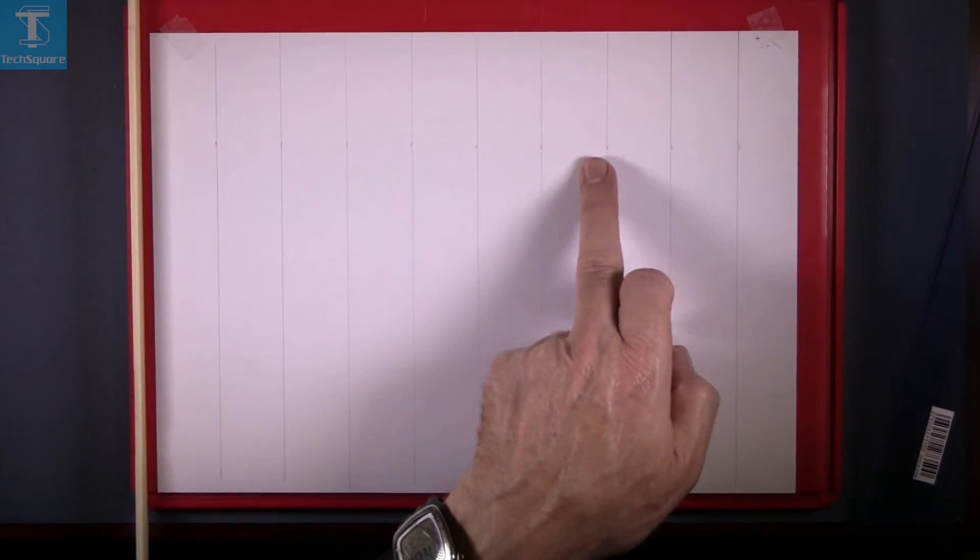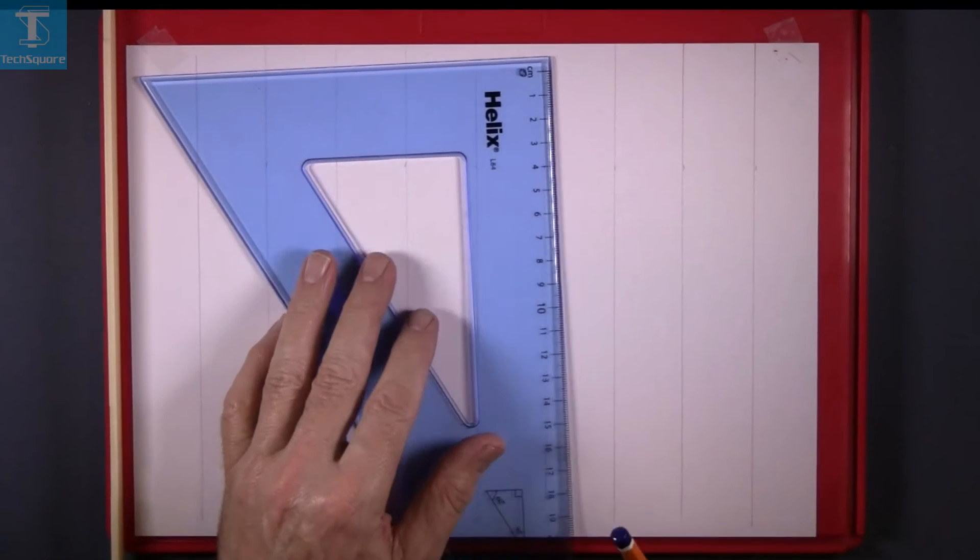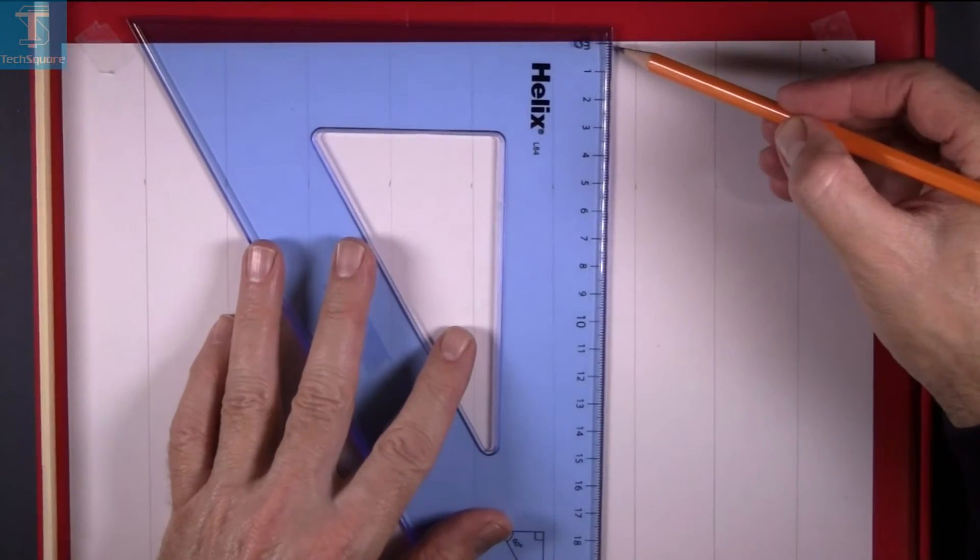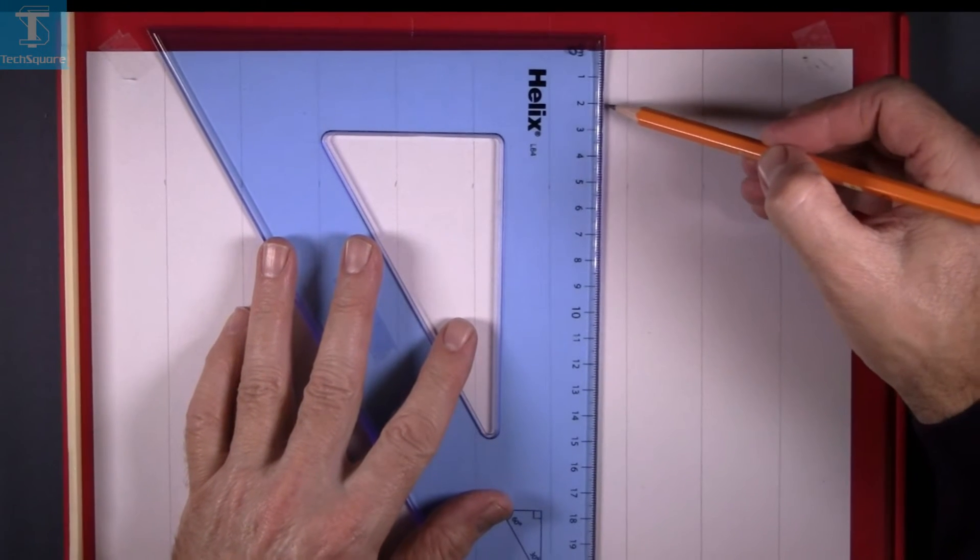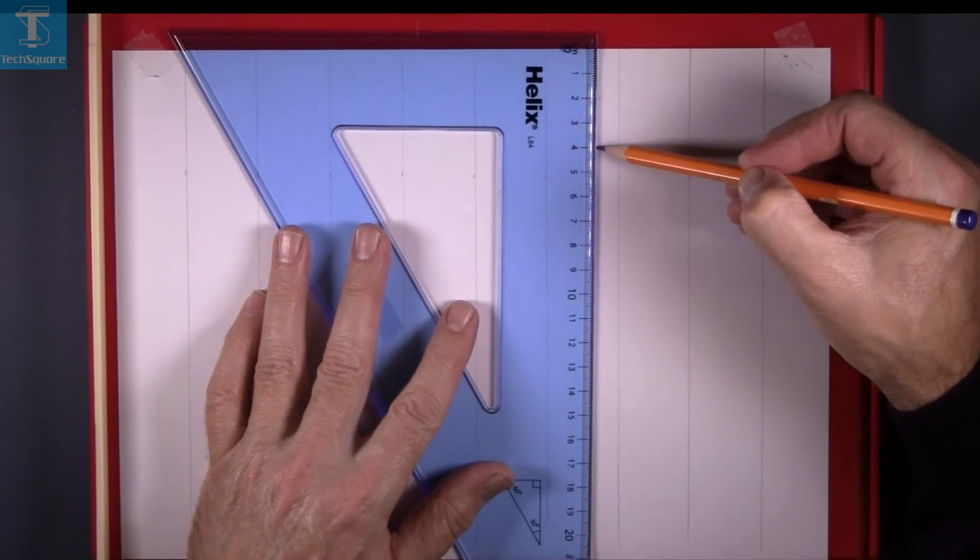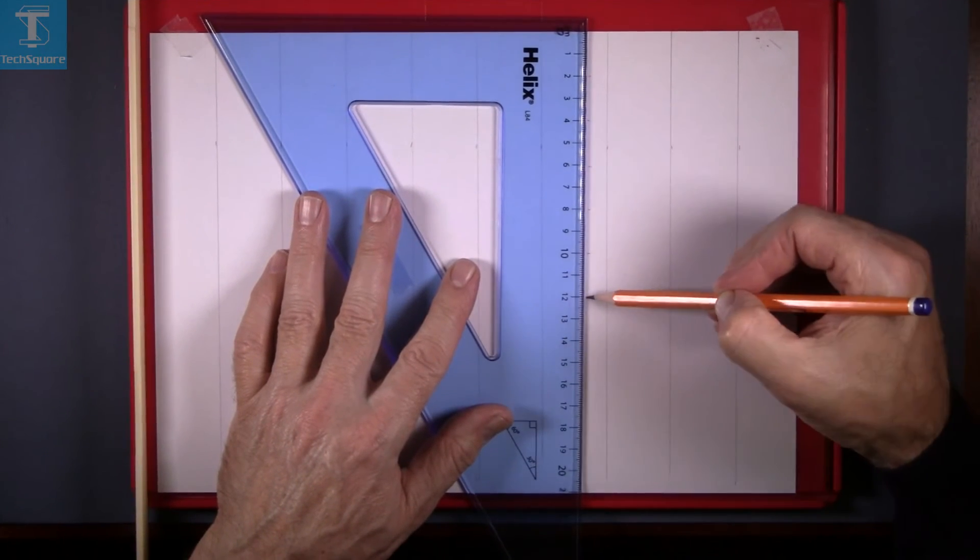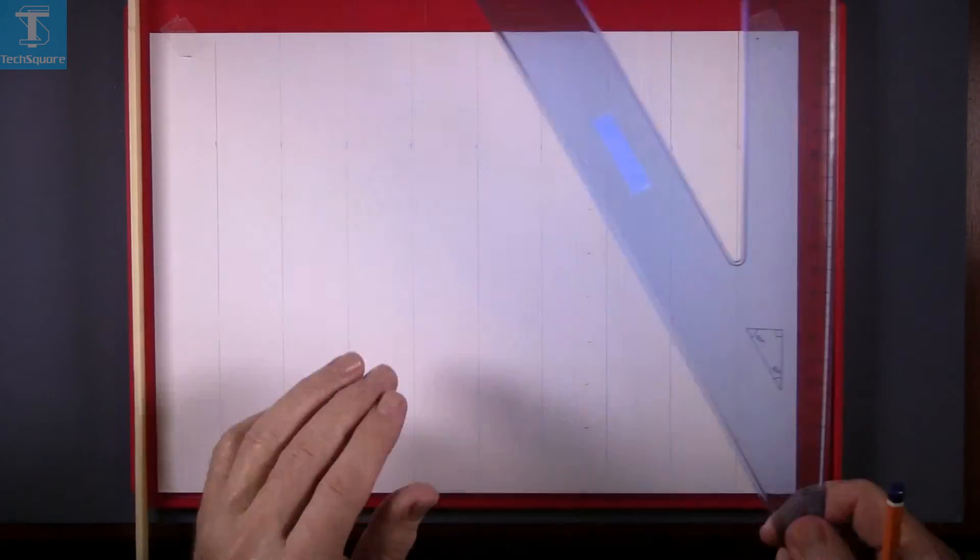Now we are talking about getting horizontal lines, lines across the sheet. We are going to go 2 centimeters apart. Put zero at the edge of the sheet and mark 2, 4, 6, 8, 10, and so on, the full length of the sheet.